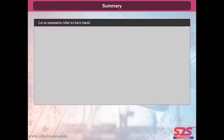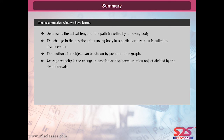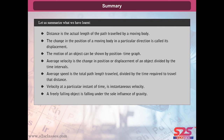Summary: distance is the actual length of the path traveled by a moving body. The change in the position of a moving body in a particular direction is called its displacement. The motion of an object can be shown by a position-time graph. Average velocity is the displacement divided by the time interval; average speed is the total path length divided by the time. Velocity at a particular instant is instantaneous velocity. A freely falling object is falling under the sole influence of gravity.